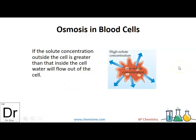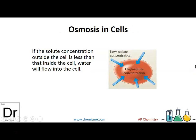We talk about osmosis in blood cells. If the solute concentration outside the cell is greater than inside, the water will move out of the cell and the cell will start to shrink — it's dehydrating. If the solute concentration outside the cell is less than inside, water will flow into the cell and it will bloat. This is why there's a perfect amount of water you should be drinking. Too little and your blood vessels might collapse; too much and they'll bloat — there are actually news articles about people who drank so much water that they drowned themselves from this process.